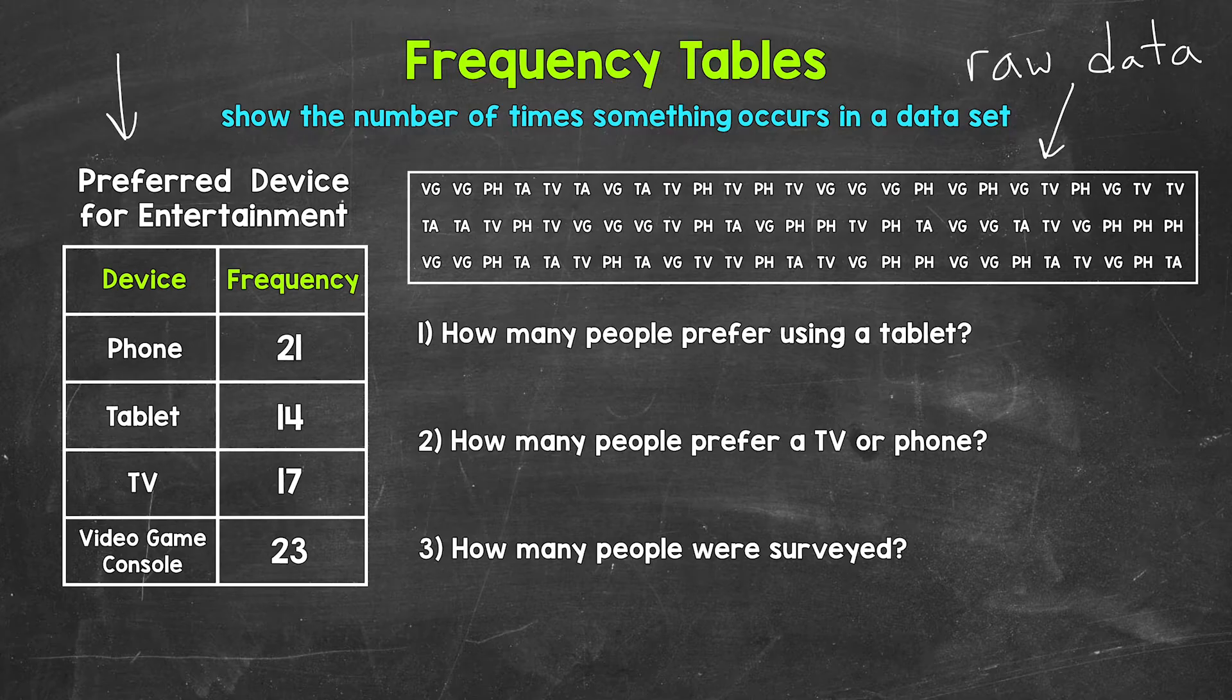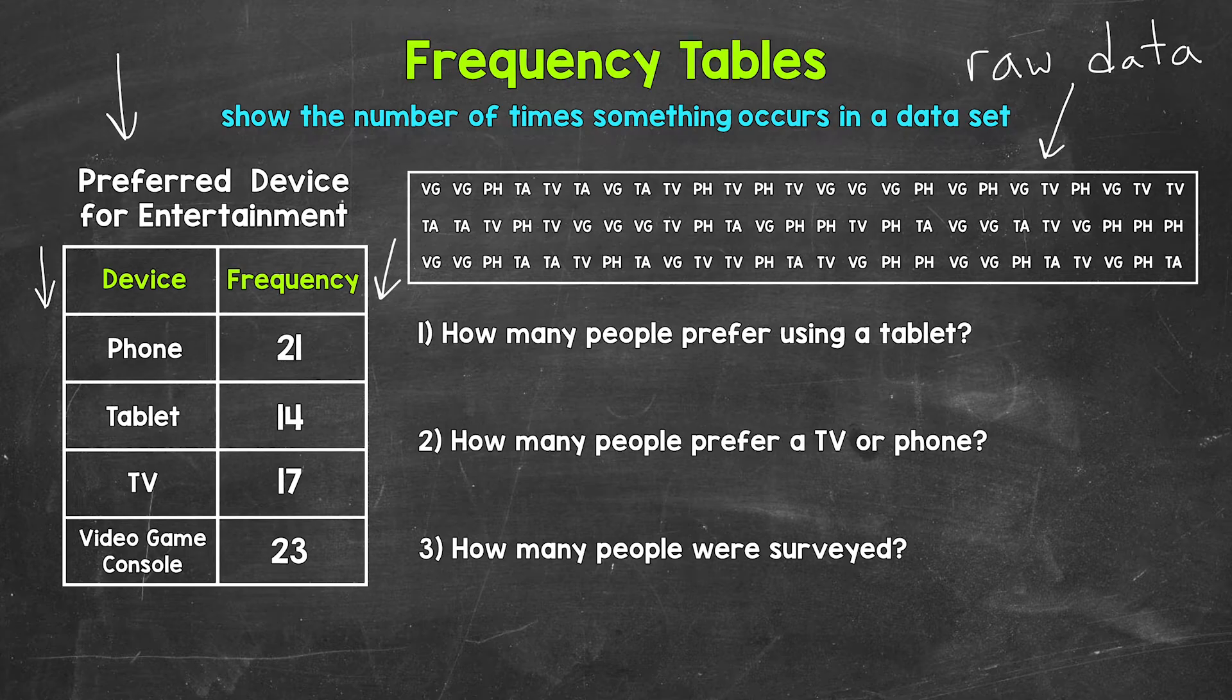So as far as this table goes, the left column shows the devices. And then the right column shows the frequency, the number of times each device shows up within the data.